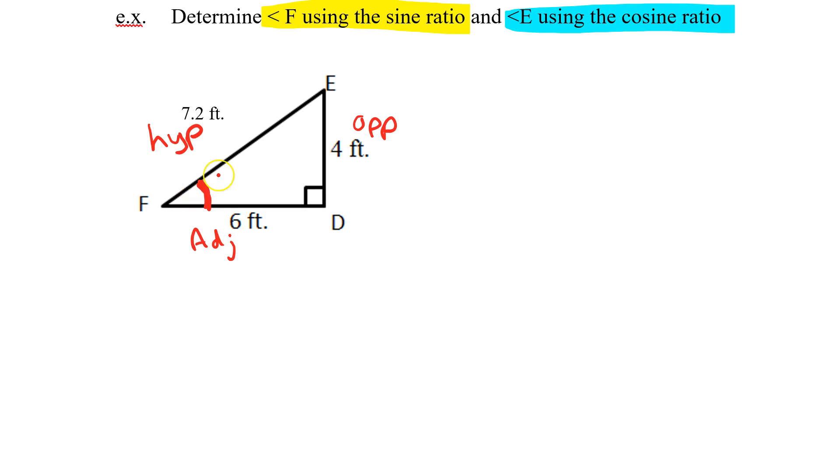So we're going to solve for F using sine. So sine of the angle is opposite over hypotenuse. Let's plug in what I know. Sine of the angle, my opposite was 4 and my hypotenuse was 7.2.